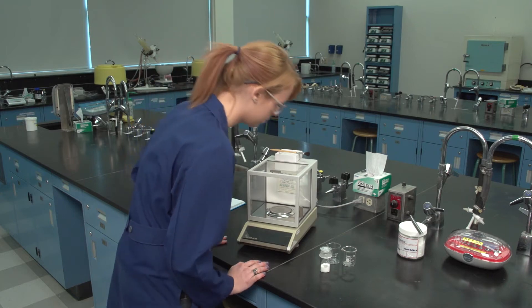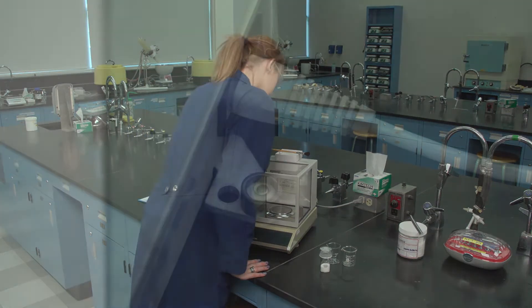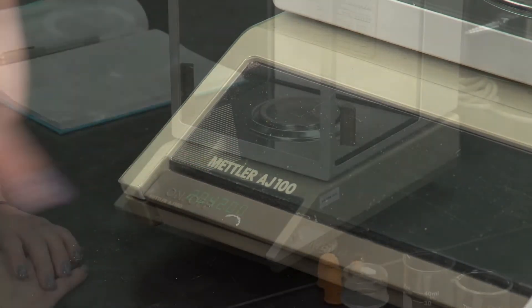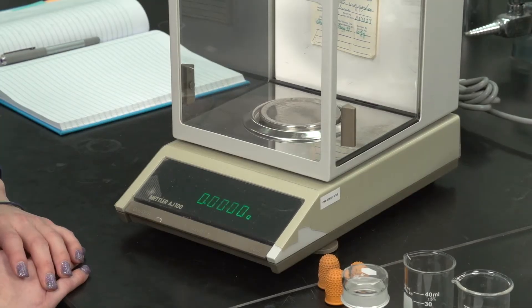Prior to use, ensure that the balance is both clean and level. Turn on the balance. Press the tare bar and wait until a stable zero reading is obtained.